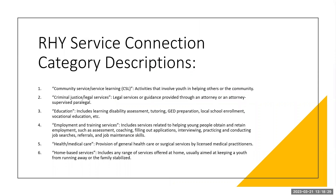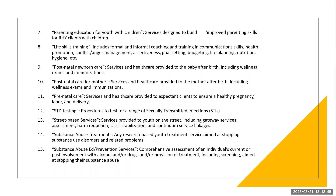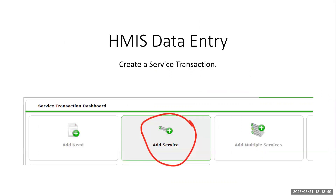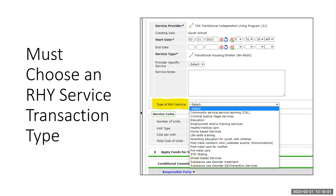RHY service connection category descriptions include services like community service and service learning — all services located within the dropdown box as an option when tracking services through HMIS service transactions. When you click add a service in the service transaction section of HMIS, you'll get a selection of services through the initial service type. The services that really matter through this data collection point are the type of RHY services located within that dropdown box. Make sure you're at least tracking each service type once through the client's time in your project, though you can track it more than once.